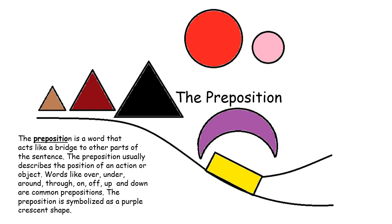on, off, up, and down are common prepositions. The preposition is symbolized as a purple crescent shape.